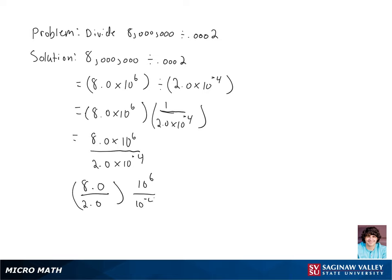Now we're gonna simplify everything inside the parentheses here. For our first set of parentheses we're left with 4.0 and our second set we're left with 10 to the tenth power. So our final answer is 4.0 times 10 to the tenth power.